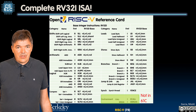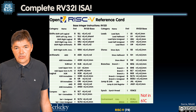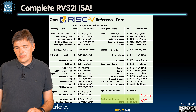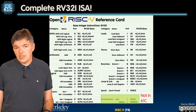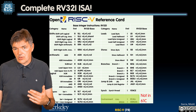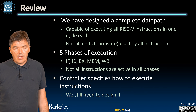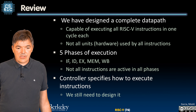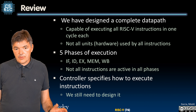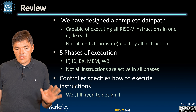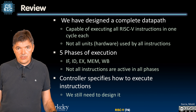Every single one of the instructions from the RISC-V green sheet can be executed. There are two left to deal with OS support, but we really don't need them for compiling programs. In a very quick summary, we have designed a complete data path capable of executing all RISC-V instructions in a single cycle each.